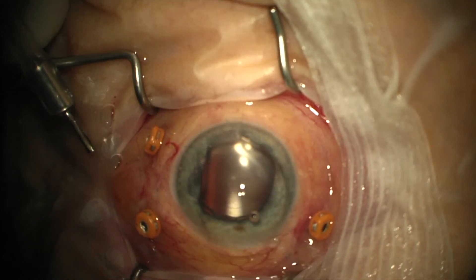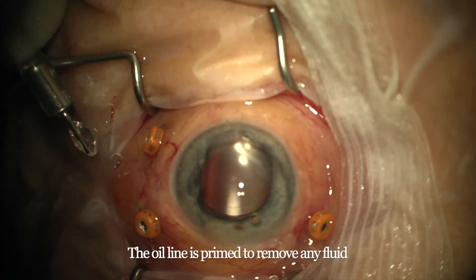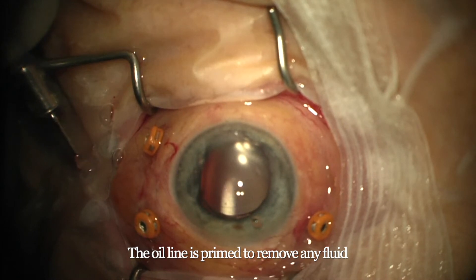This is a 23 gauge vitrectomy setup. The initial step is to take the infusion cannula out, prime it with oil, and put it back.